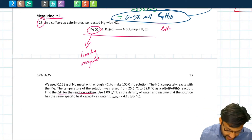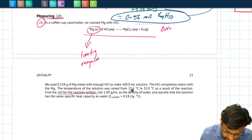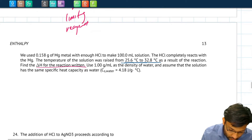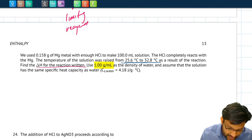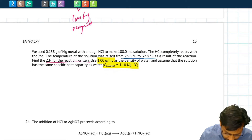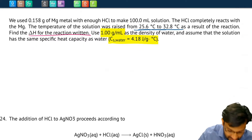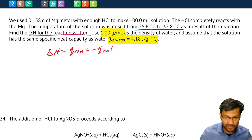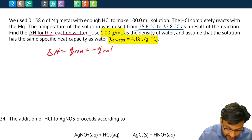It says that HCl completely reacts with the magnesium, meaning the magnesium is completely used up, and the solution changes from 25.6°C to 32.8°C as a result of the reaction. They tell us to use 1 gram per milliliter for the density of the solution and the specific heat capacity of water as the specific heat capacity of the calorimeter. Since the reaction and calorimeter are separate systems, the heat from the reaction equals the negative of the heat from the calorimeter. At constant atmospheric pressure, the heat from the reaction equals the enthalpy change.